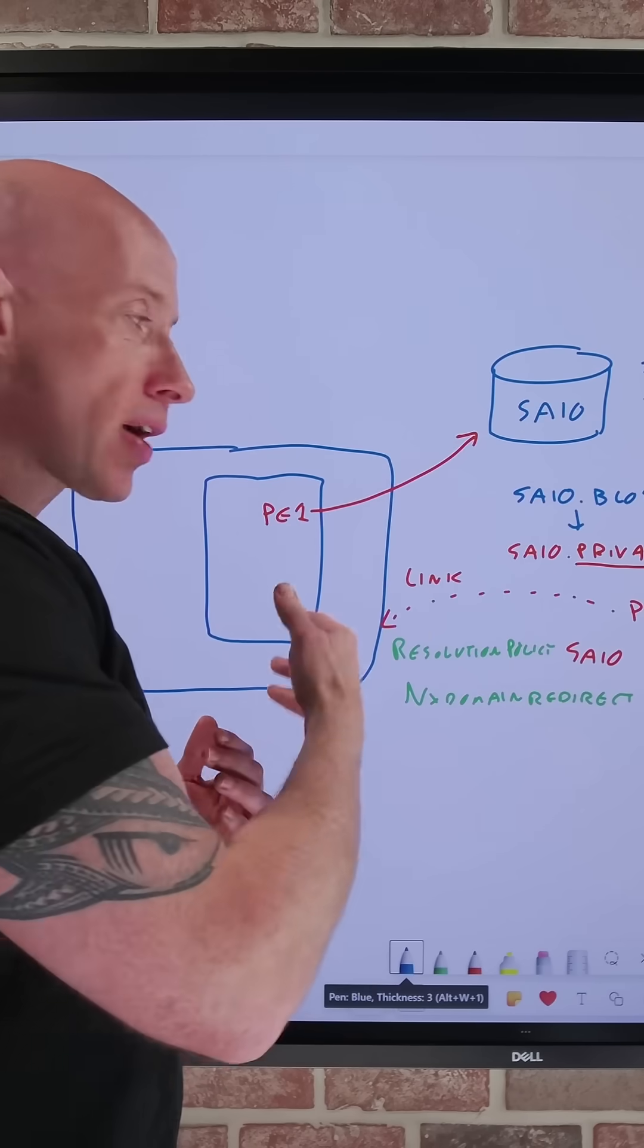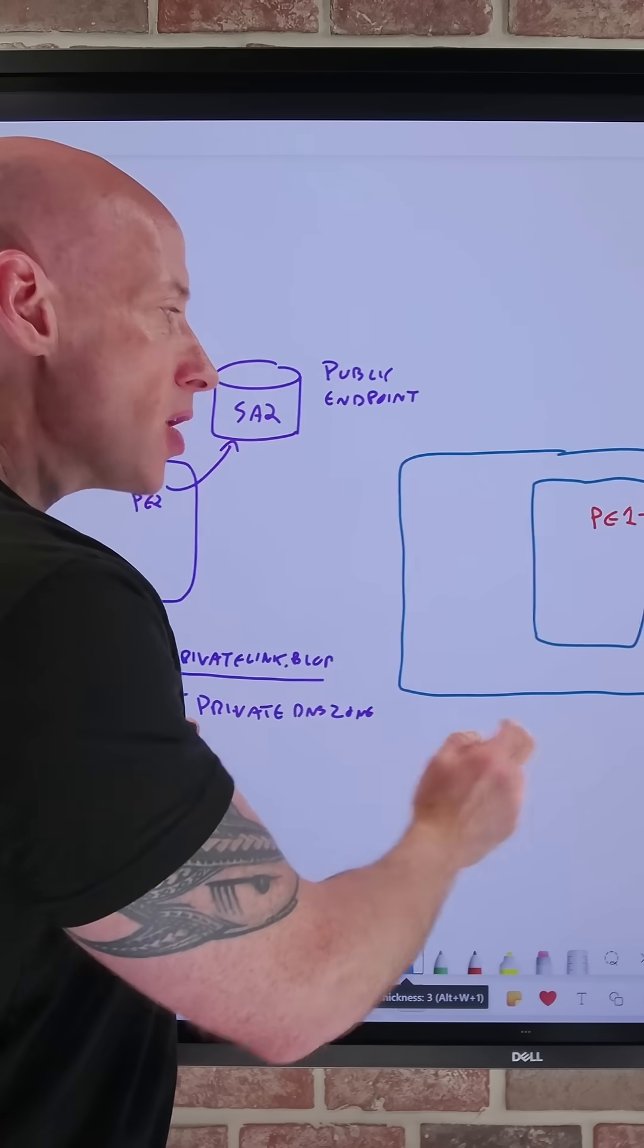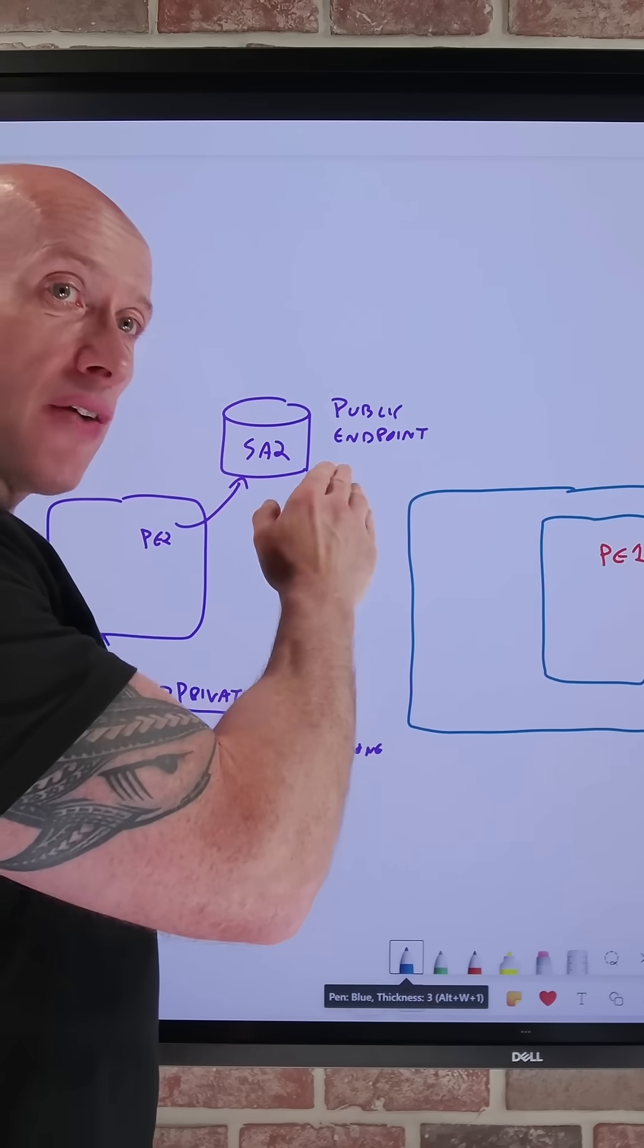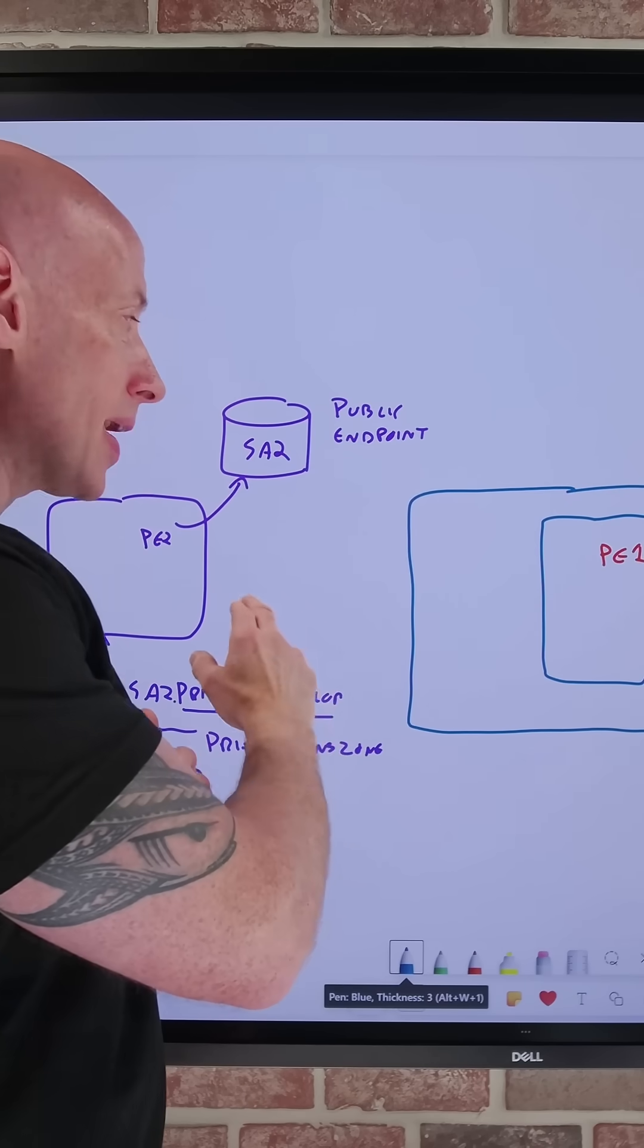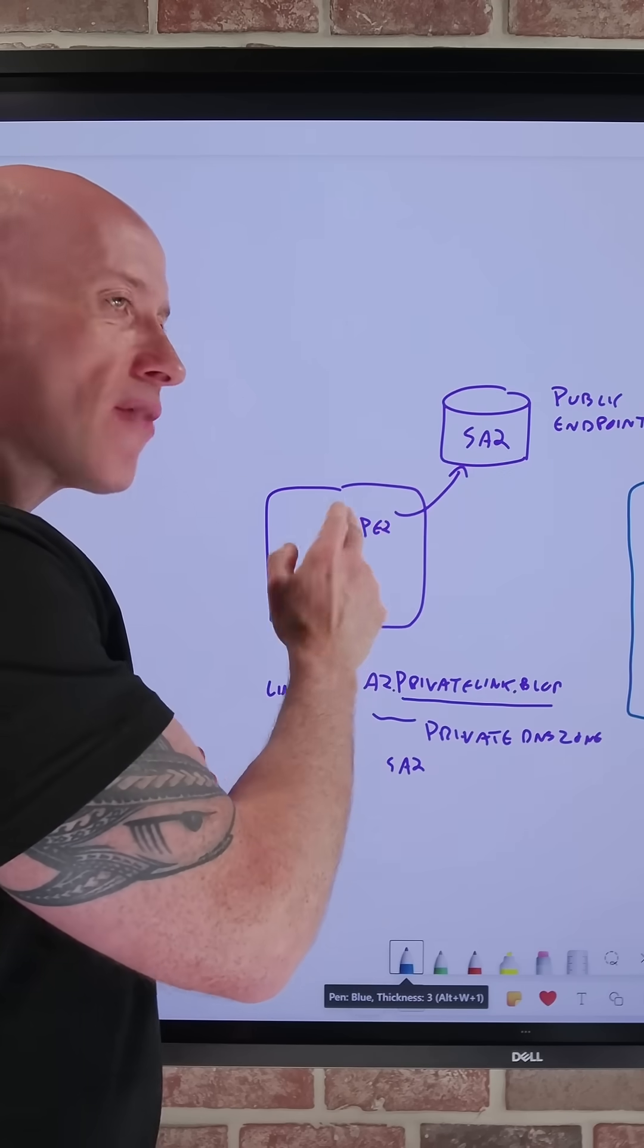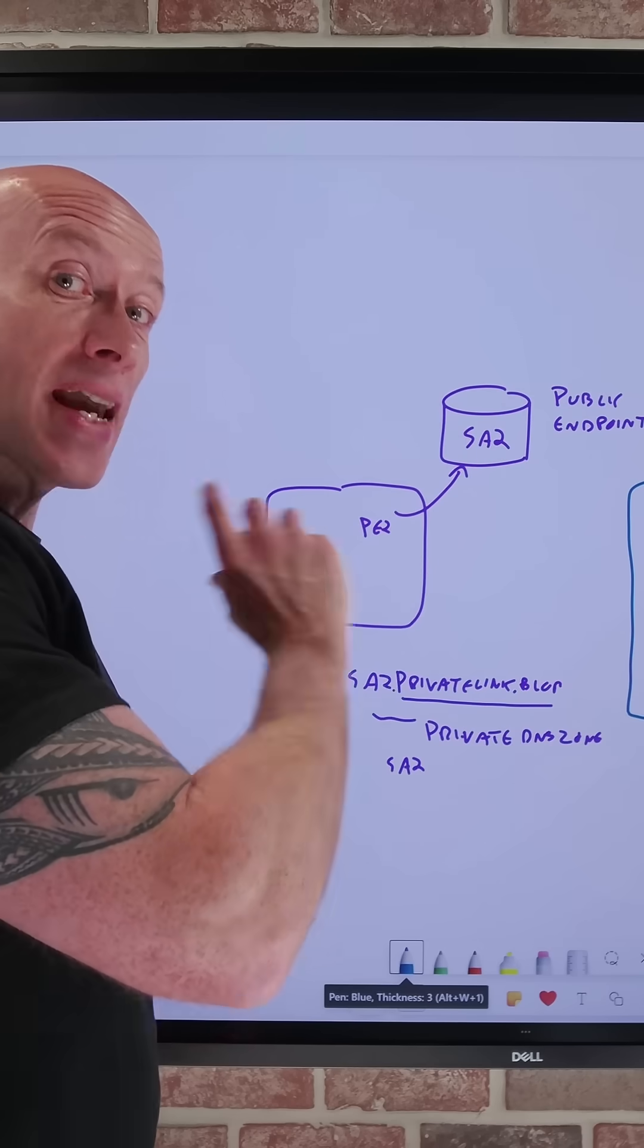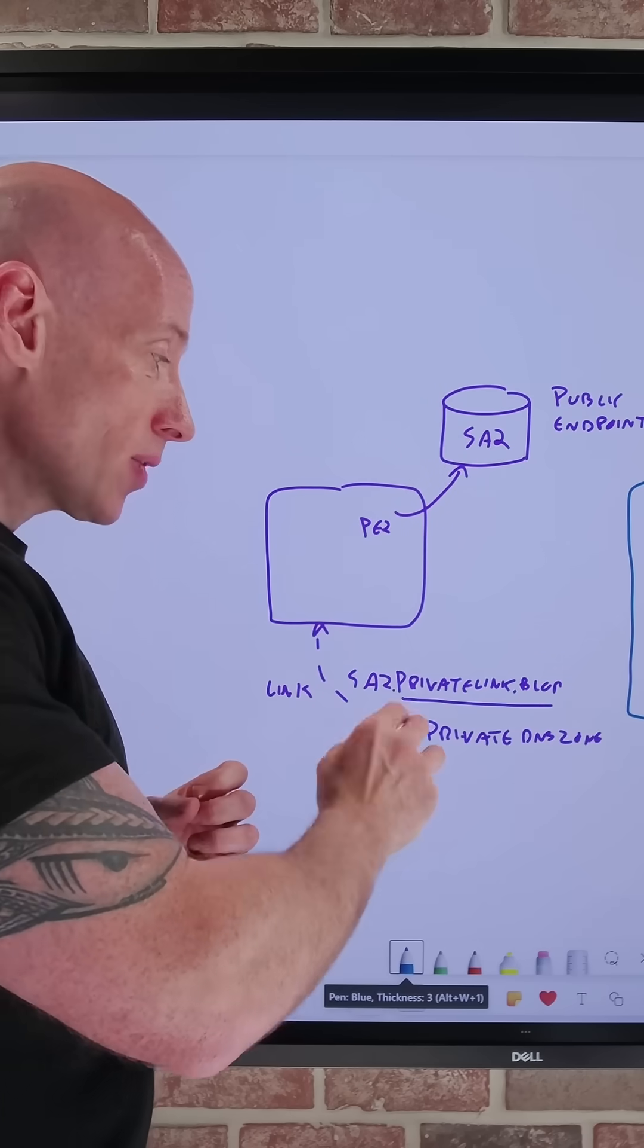I can then resolve the records in it. But if we have a scenario where there's other instances of that same type of service, like another blob service in another storage account, and it has a private endpoint in a different virtual network and is using a different instance of a private DNS zone of the same name...